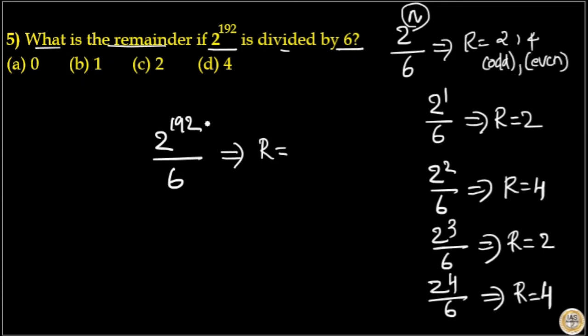Here 192, n is 192 here, here n is even. That means the remainder will be 4 here. So option D is your answer.